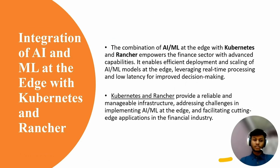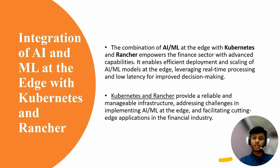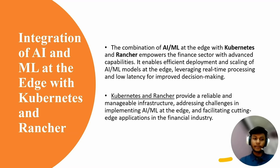Now let's talk about the integration of AI and ML at the edge with Kubernetes and Rancher. Rancher brings significant benefits to the finance sector — it enables efficient deployment and scaling of AI and ML models, leveraging real time processing and low latency. Additionally, Kubernetes and Rancher provide a reliable and manageable infrastructure addressing implementation challenges. This combination paves the way for cutting-edge applications in finance, revolutionizing the industry with advanced capabilities.